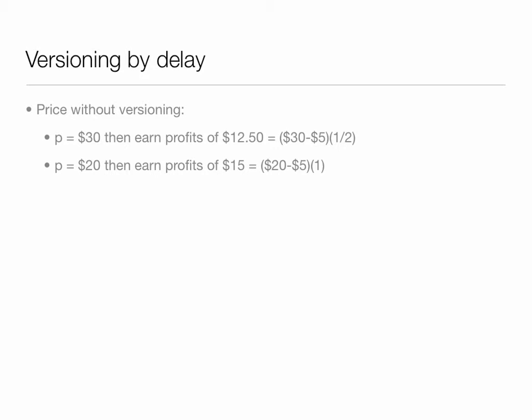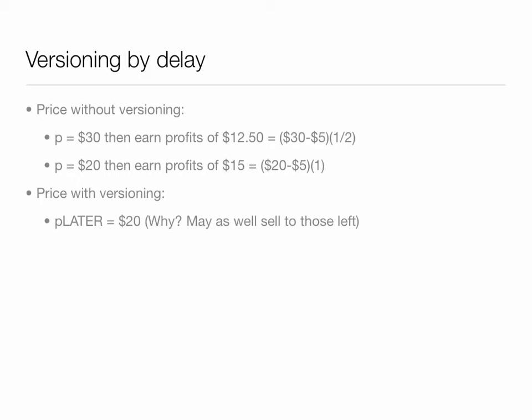What if you offered versioning — that is, a different price today versus later on? The idea is that consumers sort themselves into high willingness to pay and low willingness to pay. The low willingness to pay consumers will be purchasing later on. Their value at that time of reading is the same as it was before, which is $20, so you may as well charge that to them. They've had to wait, but they've also had to wait to pay, so their surplus doesn't change.